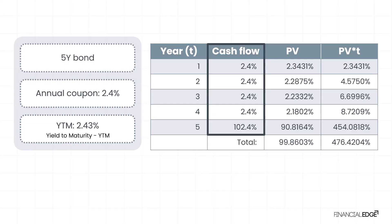In the final year, year five, the bondholder receives both the final coupon of 2.4 percent and the face value of 100 percent, resulting in a total cash flow of 102.4 percent in year five.